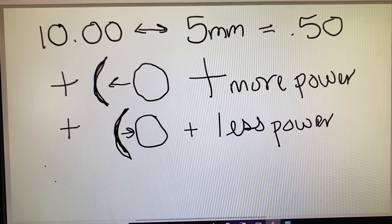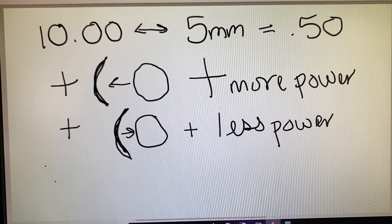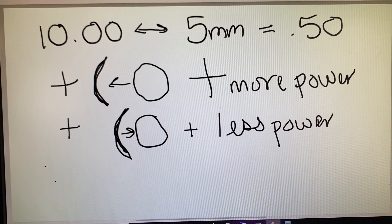Now, this would help us answer a question if they said something along the lines of a 10 diopter lens is moved five millimeters closer, a plus 10 moved five millimeters closer. What power is the patient looking through?